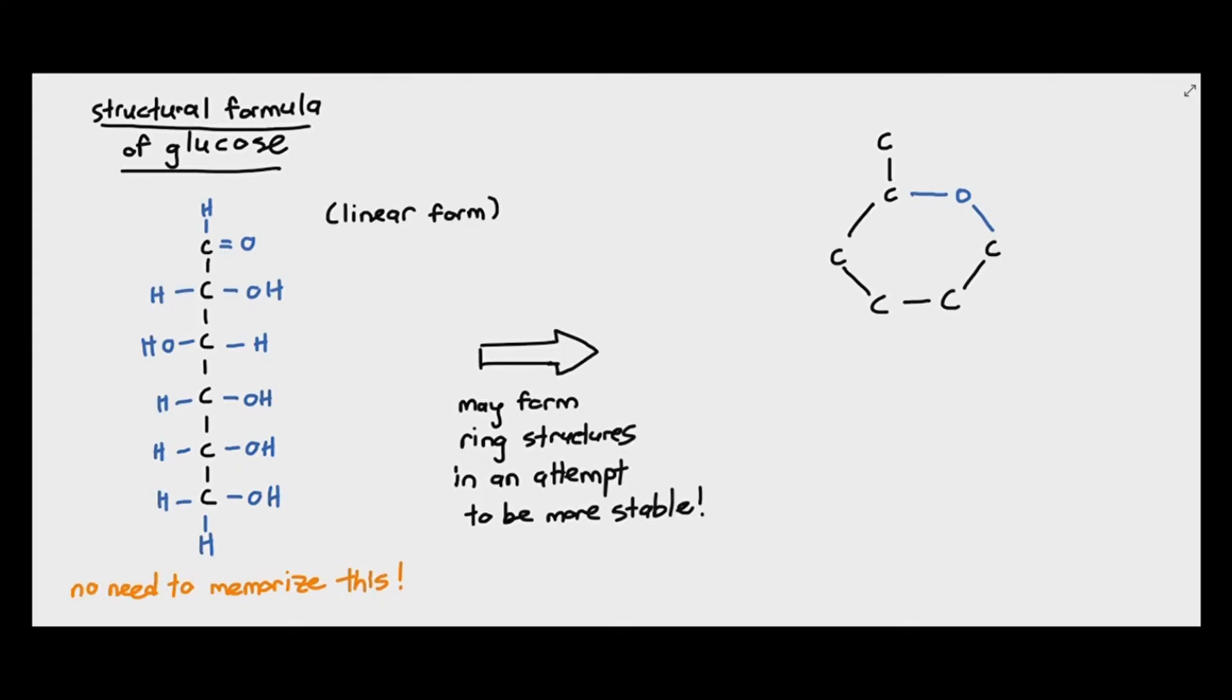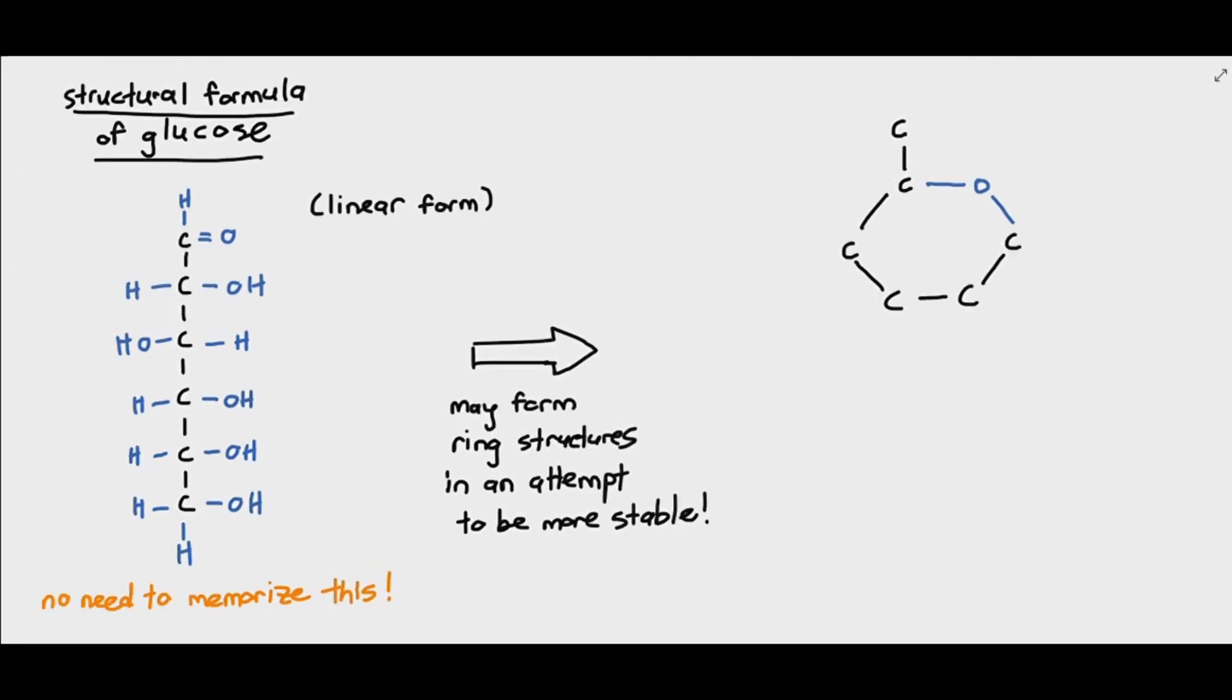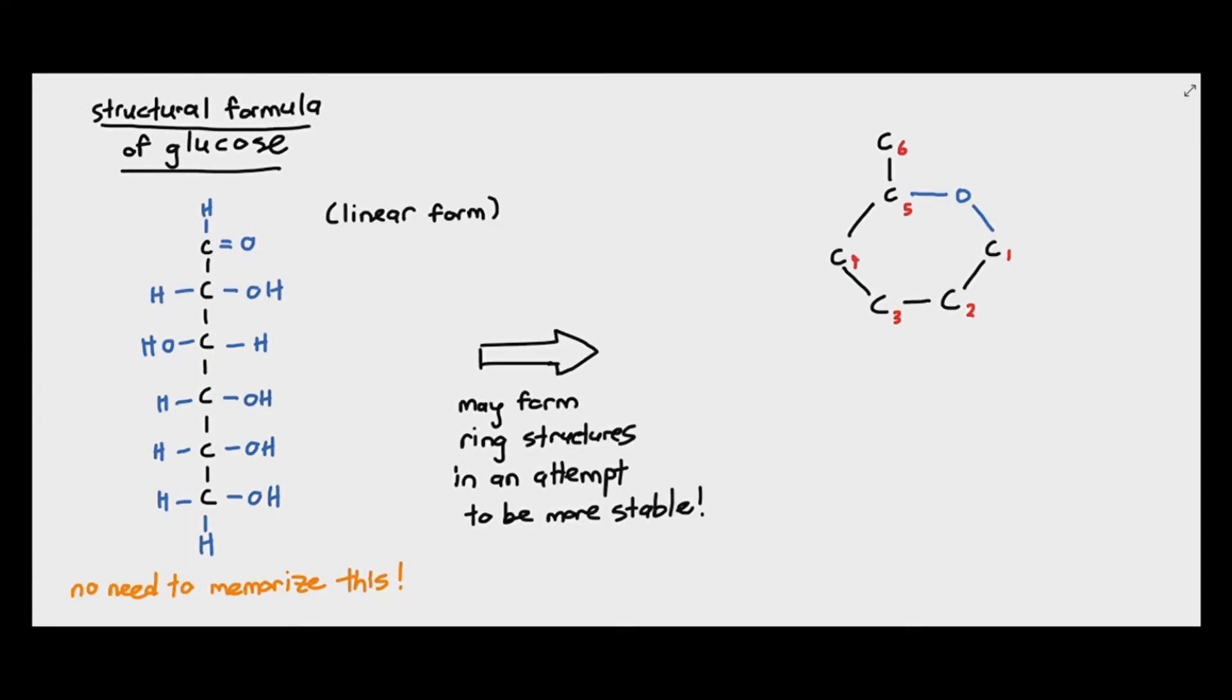When you're drawing the ring structure of the glucose molecule, as I'm showing it to you right now, the numbering of the carbon atom is important. So, we always start numbering the carbon from the right-hand side. So, the carbon on the right is carbon 1, and you go through a clockwise direction. Carbon 2, carbon 3, carbon 4, 5. And at the top is carbon 6. And it's important to know that carbon 1 and carbon 5 are linked together by an oxygen atom, not a carbon.